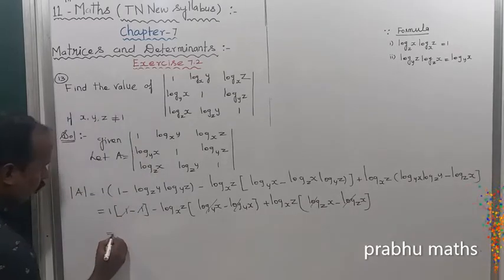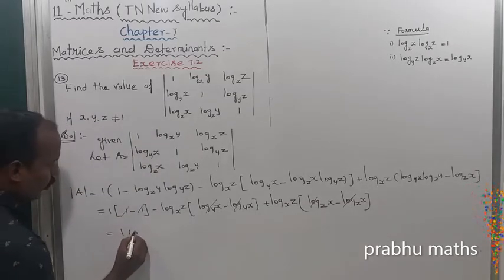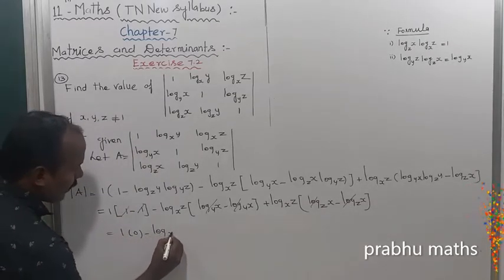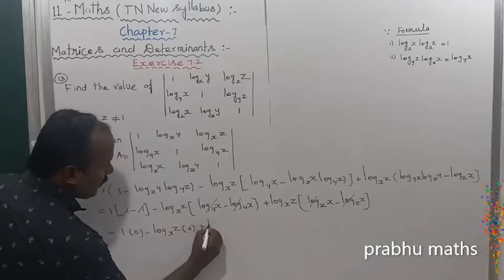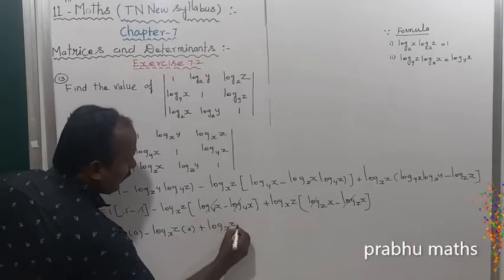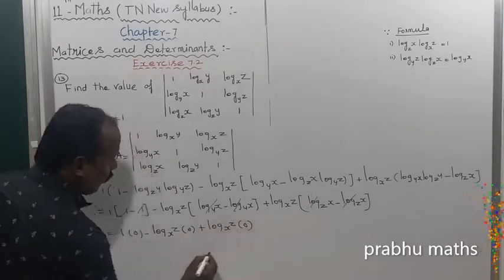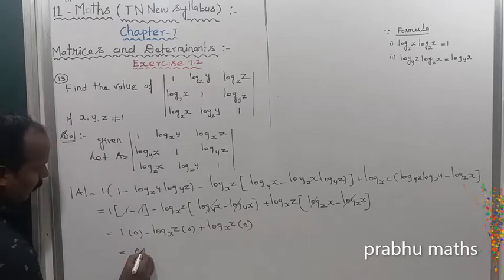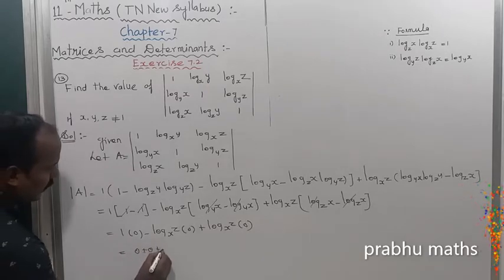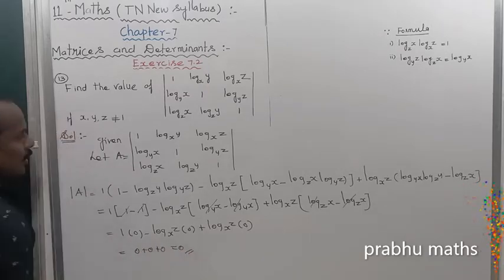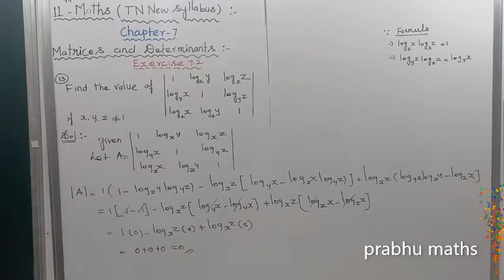So the remaining value: 1 into 0, minus log base x z into 0, plus log into x z into 0. So that is equal to 0 plus 0 plus 0 is equal to 0. We get the solution is 0.